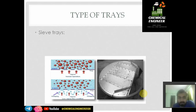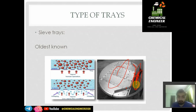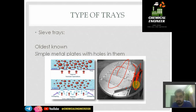Now let us discuss the types of tray. The first and oldest type is the sieve tray. A sieve tray generally looks like a sieve — you may have seen a chalni in Hindi. It has specified holes. This area is for mass transfer, and the open area on the side is for the downcomer. Weirs are present on all sides to hold the liquid. The vapor from the bottom goes to the upper part through the holes, forming bubbles for mass transfer.